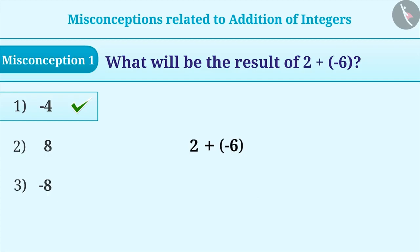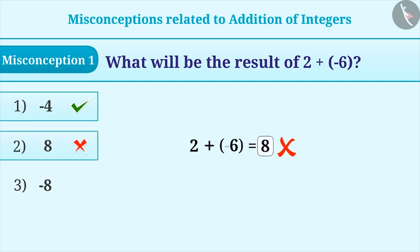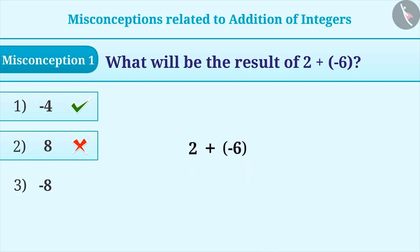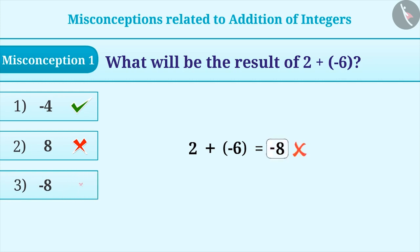Sometimes the signs are ignored during addition and an incorrect answer is chosen, i.e., option 2, which is 8. Similarly, sometimes the numeral values of numbers, i.e., values without signs, are added and the sign of the integer with greater numeral value is placed. This leads to an incorrect answer, i.e., option 3, which is minus 8.